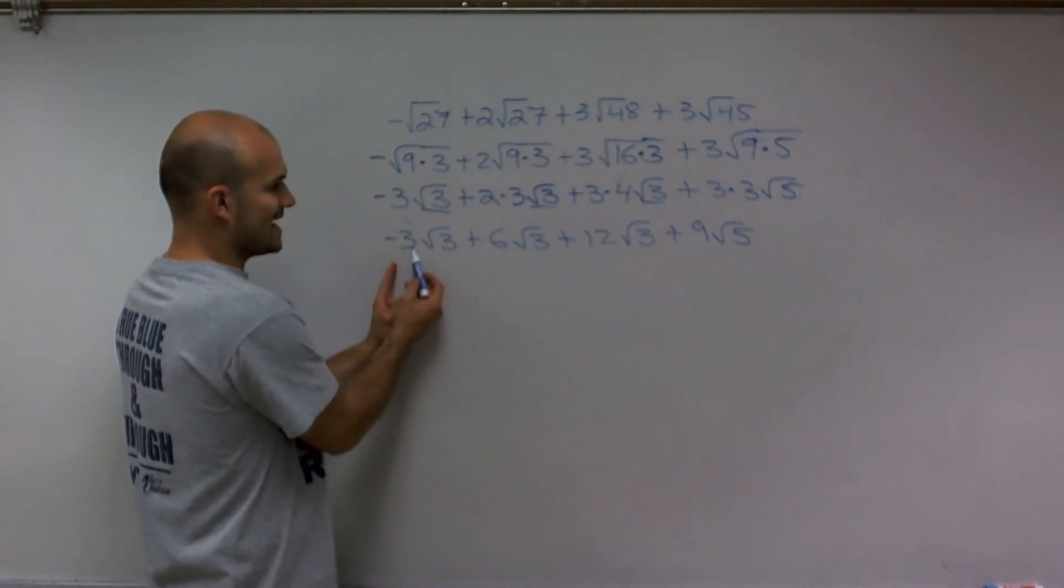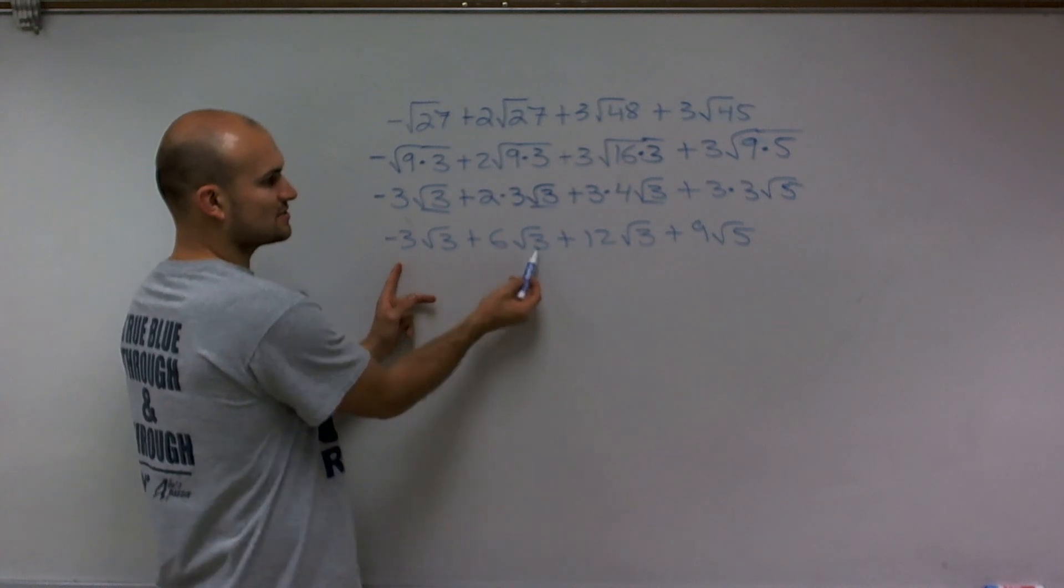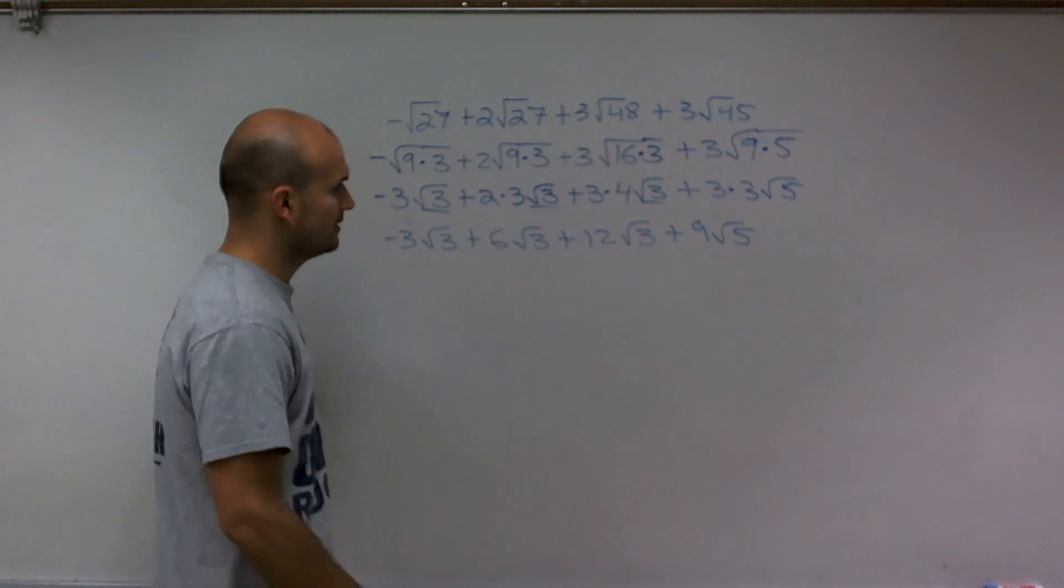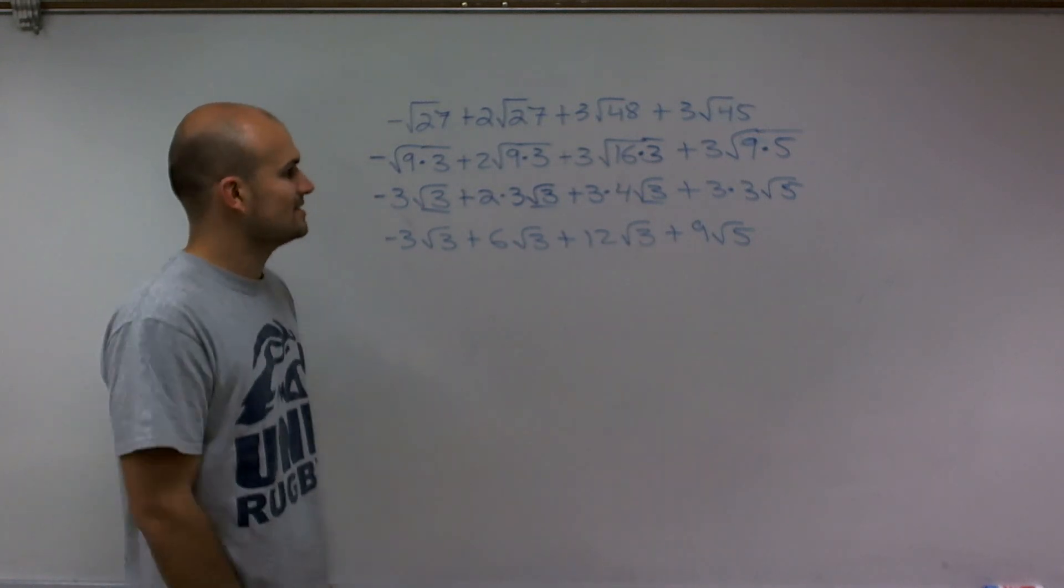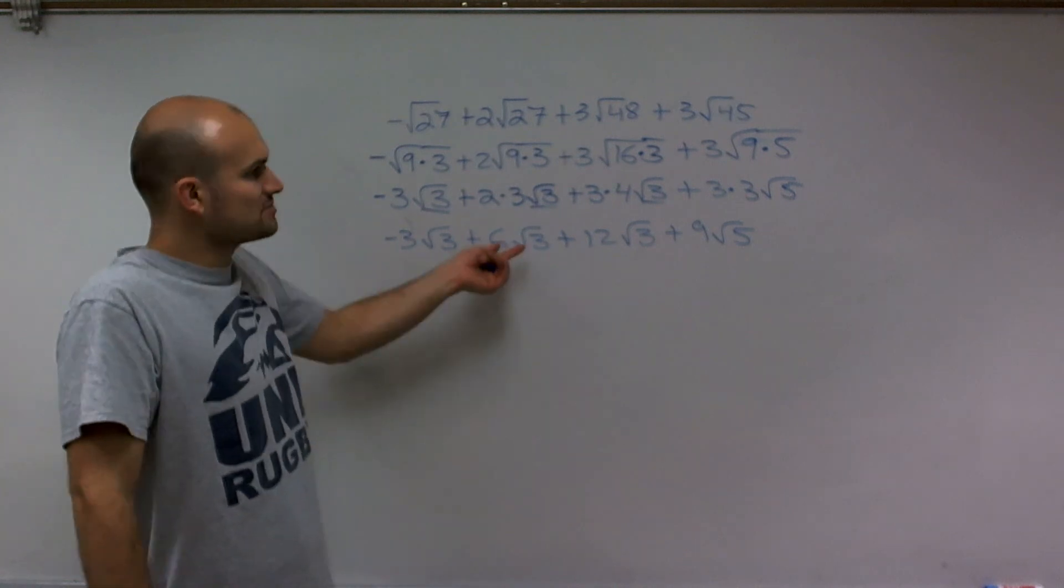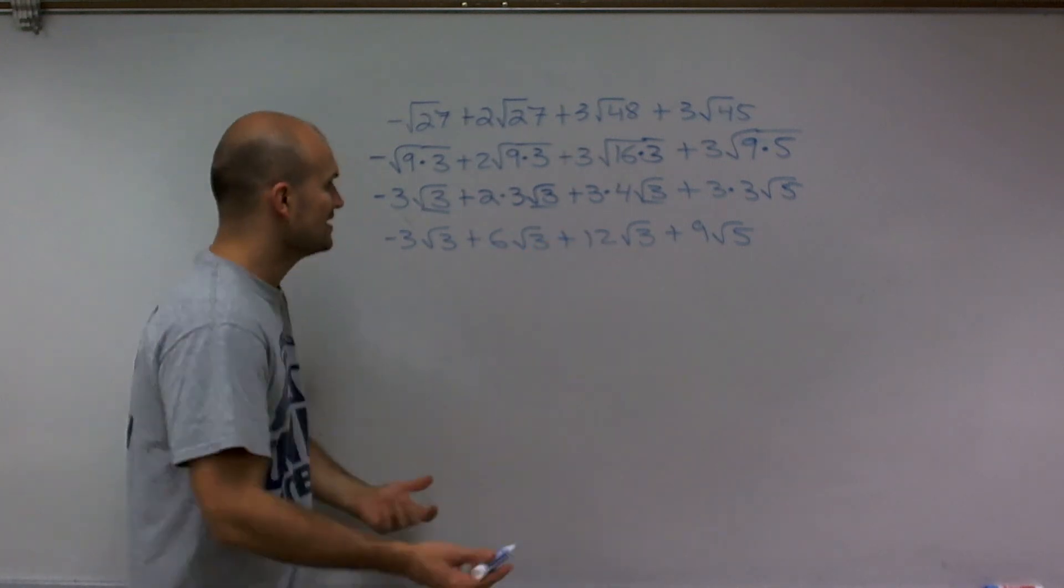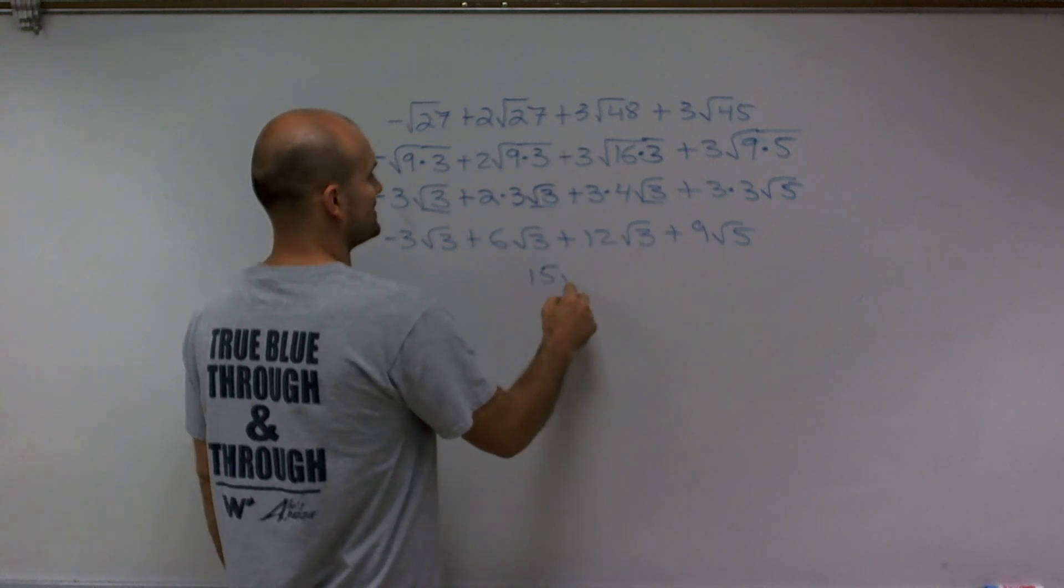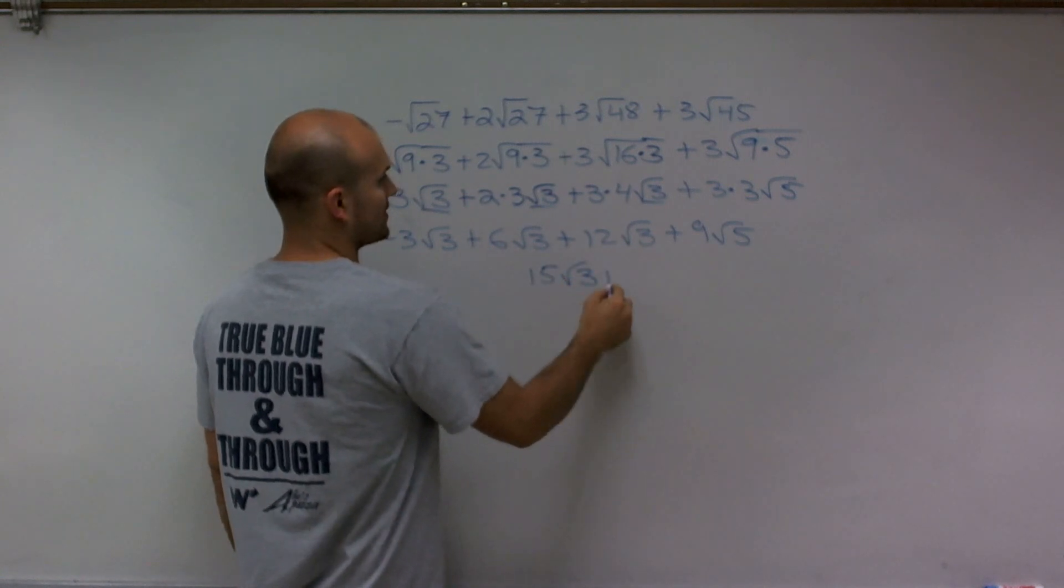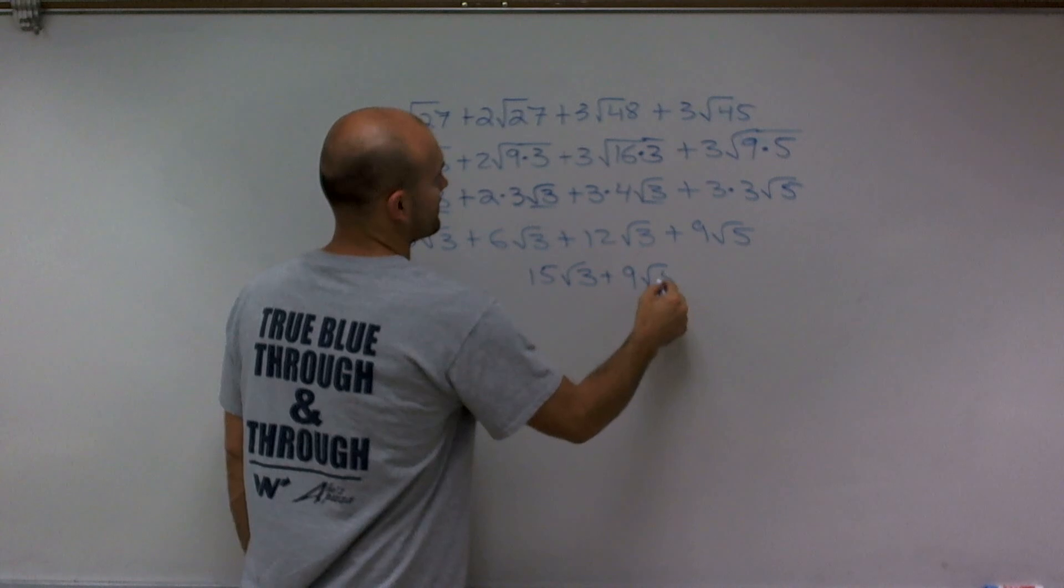But I can combine negative 3 square root of 3, plus 6 square root of 3, plus 12 square root of 3. And since they're like terms, just think of it as like oranges: negative 3 oranges plus 6 oranges plus 12 oranges. You're going to end up with a positive 15 square root of 3, plus 9 square root of 5.